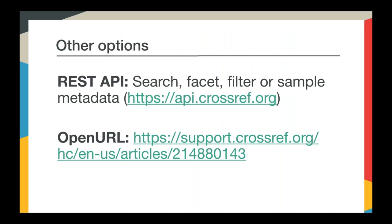Some other options for matching citations to DOIs: we have a REST API that you can use to search, facet, filter, or sample metadata from all of our publisher members — it's updated continuously. It's not usually the best option for automated DOI-to-citation matching unless you're able to evaluate results for accuracy; it's used more for bulk downloading of data or filtering on specific information like records with funding data. We also have an OpenURL API, used primarily by libraries, but it can be used to match metadata to DOIs. It's not as effective as XML querying, but it's simple if you can break your citations into parts.